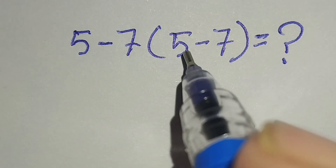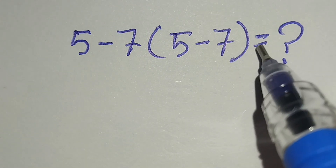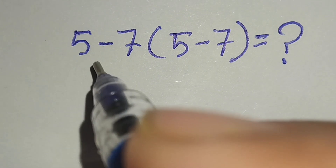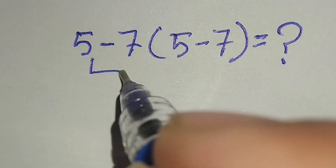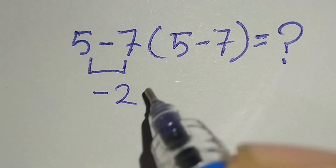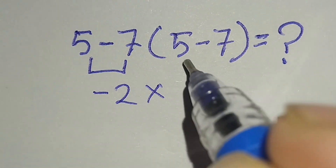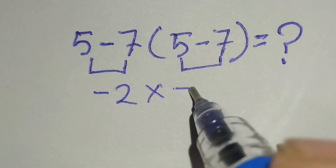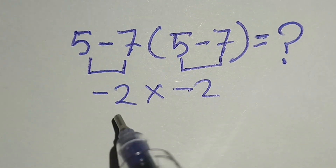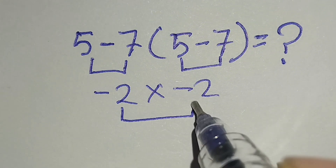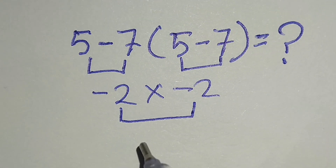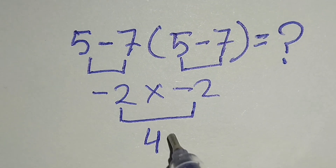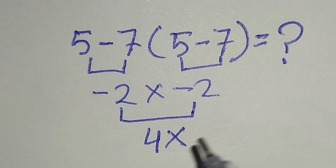5 minus 7 bracket 5 minus 7 is equal 1. Here 5 minus 7 gives us negative 2. Multiply this: 5 minus 7 gives us negative 2. Negative 2 times negative 2 gives us positive 4. But this answer is not correct.